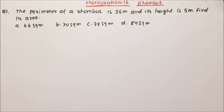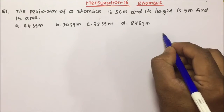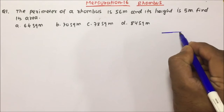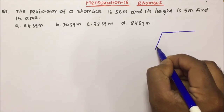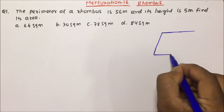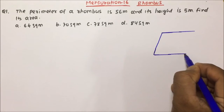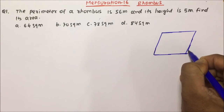Friends, our today's topic is rhombus. First we will understand what is rhombus and then we will see how we are going to solve questions based on rhombus. If I draw a figure, rhombus is a quadrilateral whose four sides are equal. So this will become our rhombus.